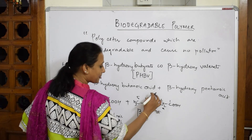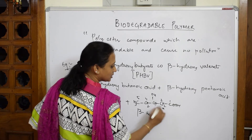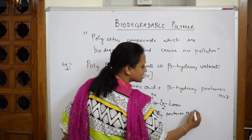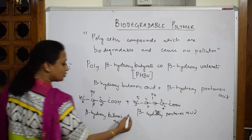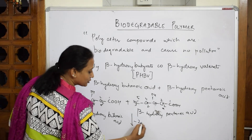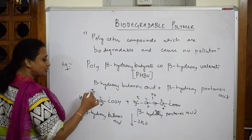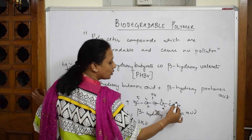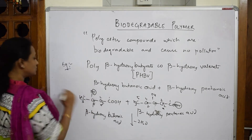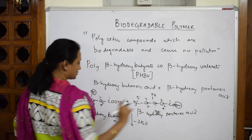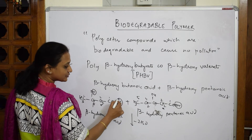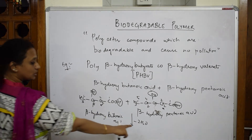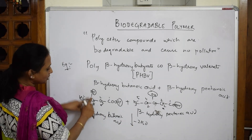These two monomers together undergo condensation polymerization, where water molecules are removed. We remove one H from one molecule and one OH from another to form the first linkage — that's one water molecule gone. Then we remove one H from the next position and one OH from the other end — a second water molecule is removed.